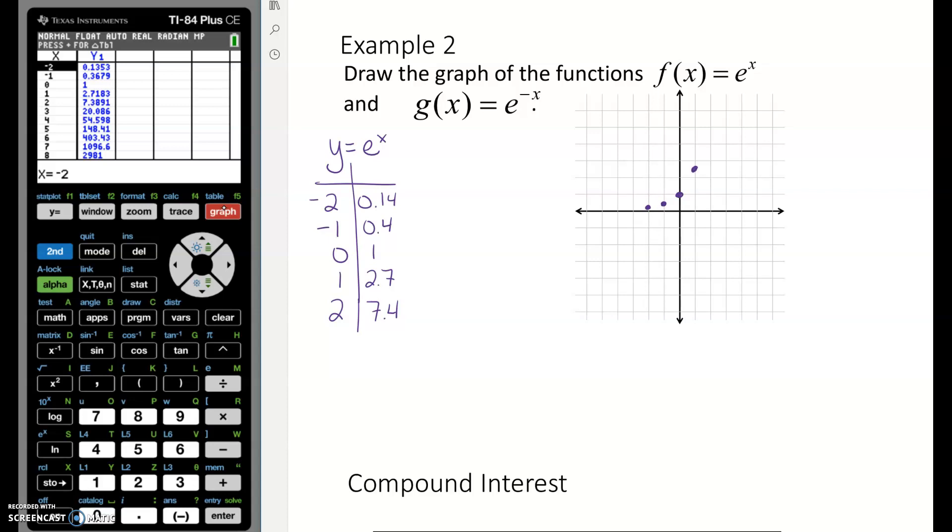At x = 2, it's at 3, 4, 5, 6, 7.4. There's your exponential growth function. Still has an asymptote on the x-axis.